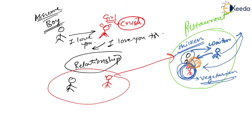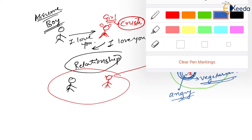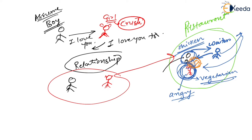But this particular girl is a vegetarian. She will definitely become angry. The boy thinks, 'What have I done? Why is she angry?' He had asked her what to order and she said 'order anything you want.' But he does not know — mark my words — this boy does not know, does not observe, that the girl is a vegetarian.